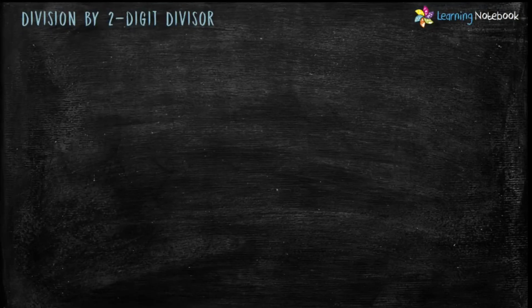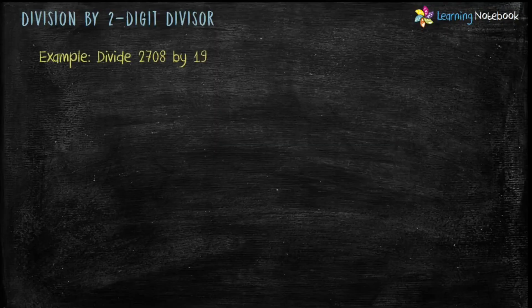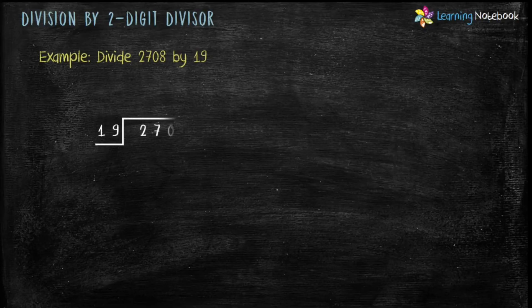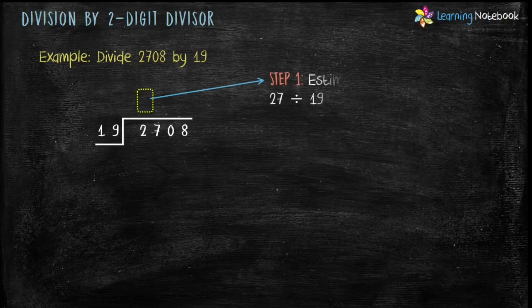This method is very useful when the divisor is a large number, like 27, 38, and so on. Now let's do one more question: divide 2708 by 19 using the long division method. Form a tent and put the dividend inside the tent and the divisor outside the tent. In this question, first we have to divide 27 by 19. The question is: which number should we multiply by 19 to get the nearest multiple to 27?